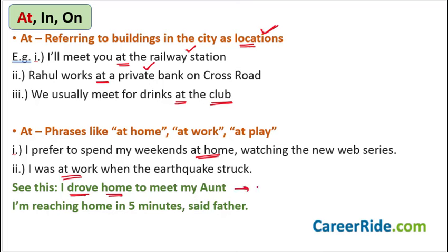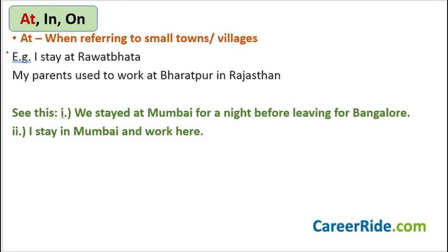Whenever there is a sense of motion, you do not use 'at.' You simply write 'I drove home to meet my aunt.' Similarly, 'I'm reaching home in five minutes,' said father. Before 'home' here also there's no 'at.' Why? Because there's a sense of motion again. Now, pay attention — whenever we are referring to small towns and villages, we use the preposition 'at.' With big cities and metros, we use 'in.'